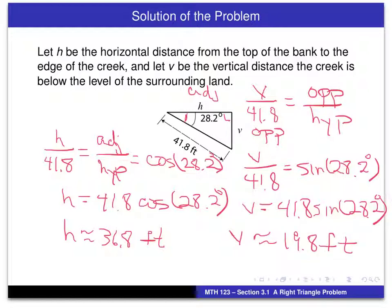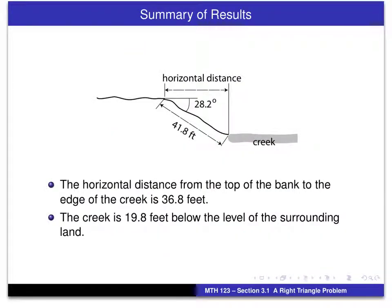In effect, now we've solved the given problem. About the only thing we haven't determined in this right triangle is the measure of this angle, but that's not required for this problem. In summary, answering the question using a complete sentence, the horizontal distance from the top of the bank to the edge of the creek is 36.8 feet, and the creek is 19.8 feet below the level of the surrounding land.